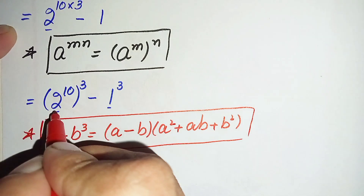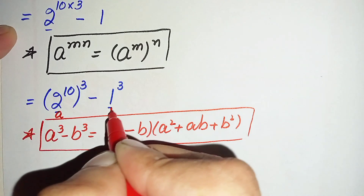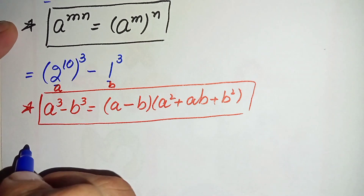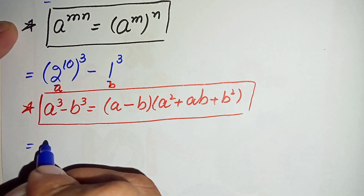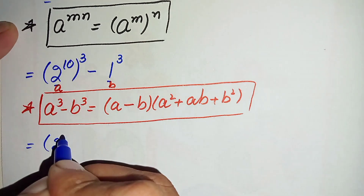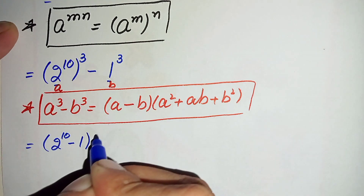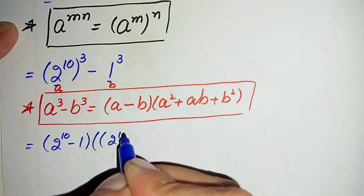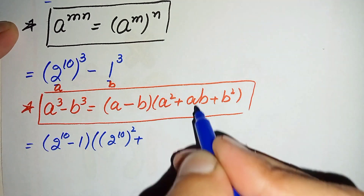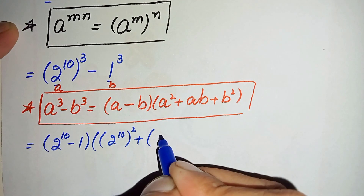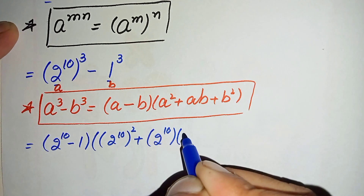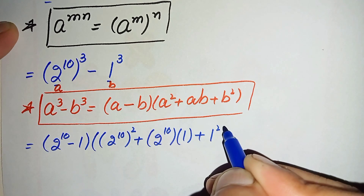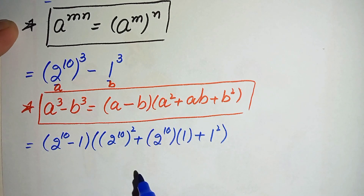Using this cubic identity in our equation, where a is 2 raised to power 10 and b is 1, this equation will become: (2 raised to power 10 minus 1) times (2 raised to power 10 whole squared, plus 2 raised to power 10 times 1, plus 1 squared). And 1 squared is simply 1.